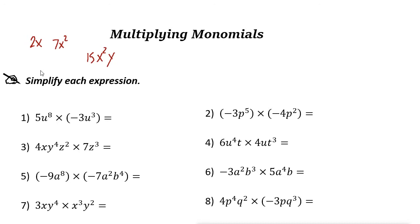When you multiply monomials, first multiply the coefficients. The coefficient is a number placed before and multiplying the variable.